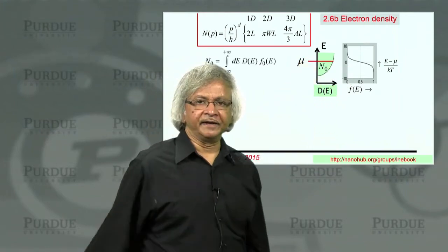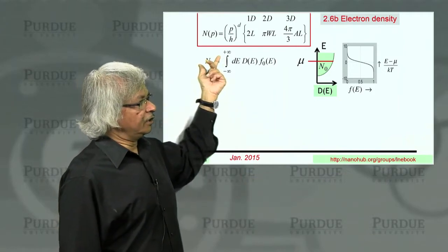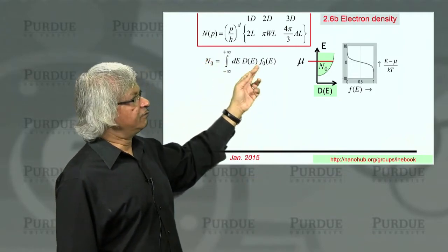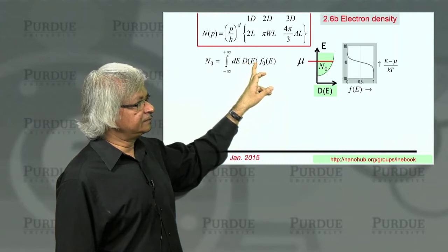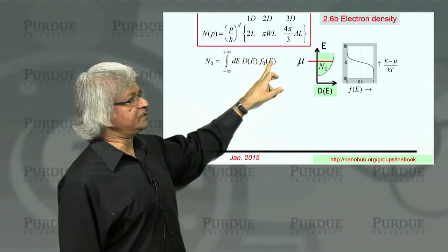Now, if you wanted to calculate the number of electrons, what you should do then is N0, number of electrons, would be like d, density of states, times F0. Density of states tells you how many states you have per unit energy.